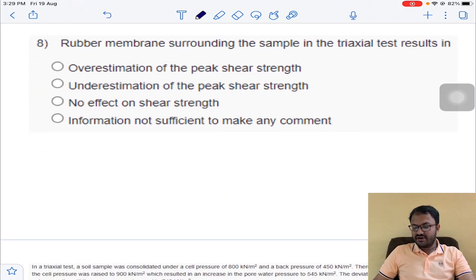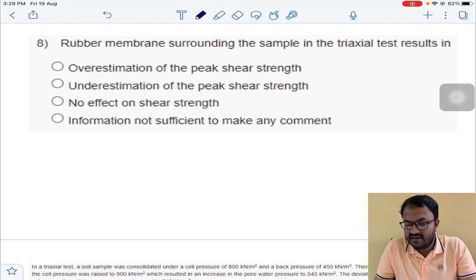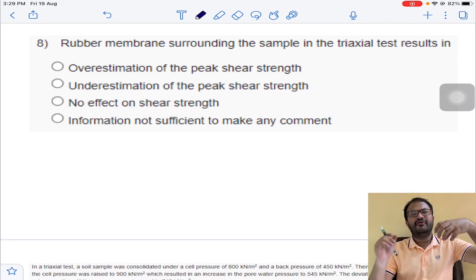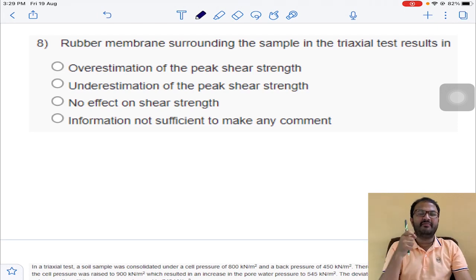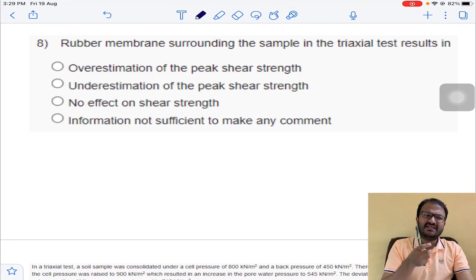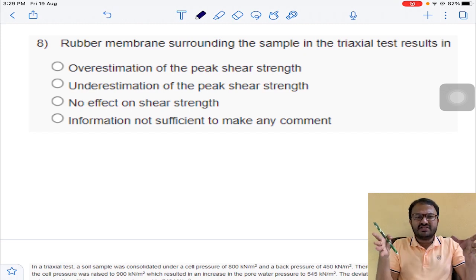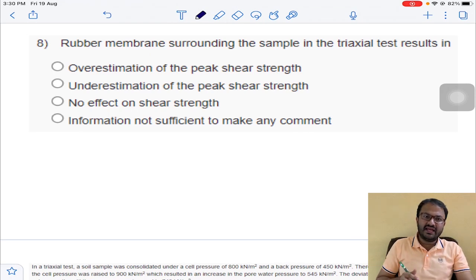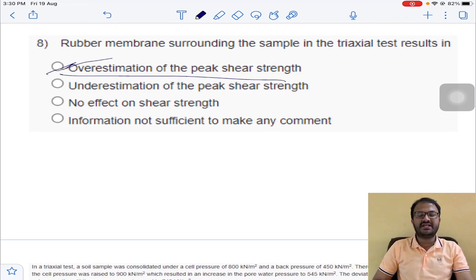Rubber membrane surrounding the sample in triaxial test results in what? Generally we will place some rubber membrane for conduction of triaxial test. By providing this rubber membrane, will it give over estimation or underestimation? Because of confinement from all the sides, it will take more load. It will give over estimation of the results, over estimation of the peak strength. Option A for question number 8.